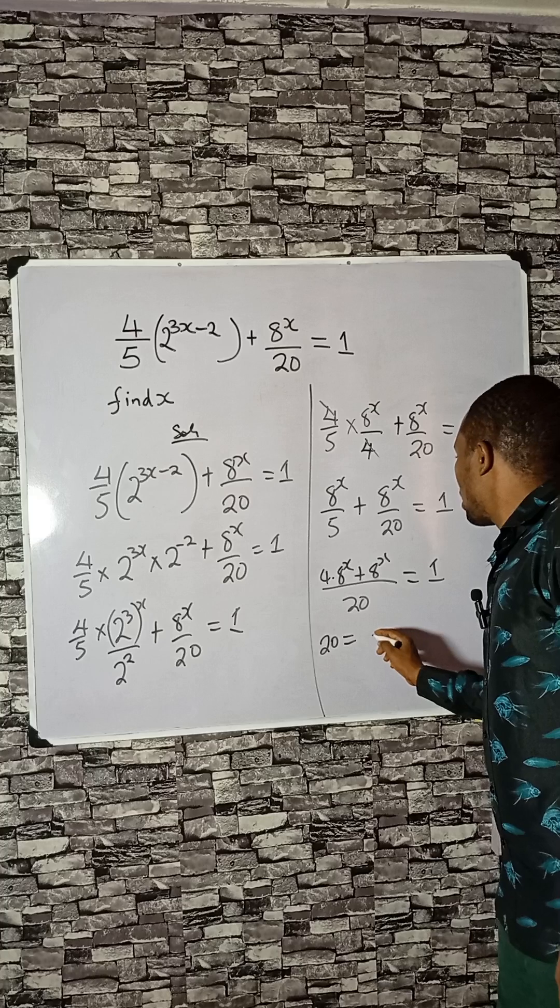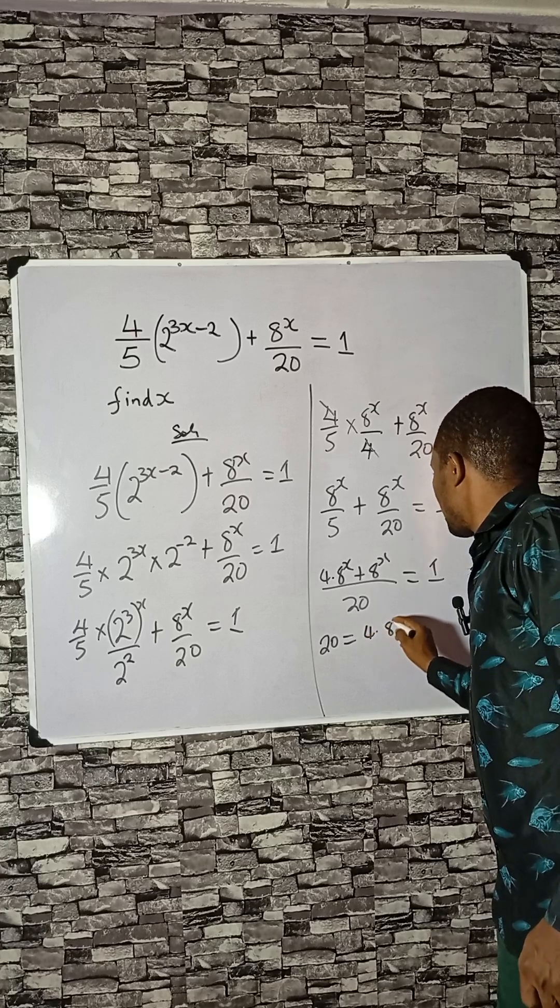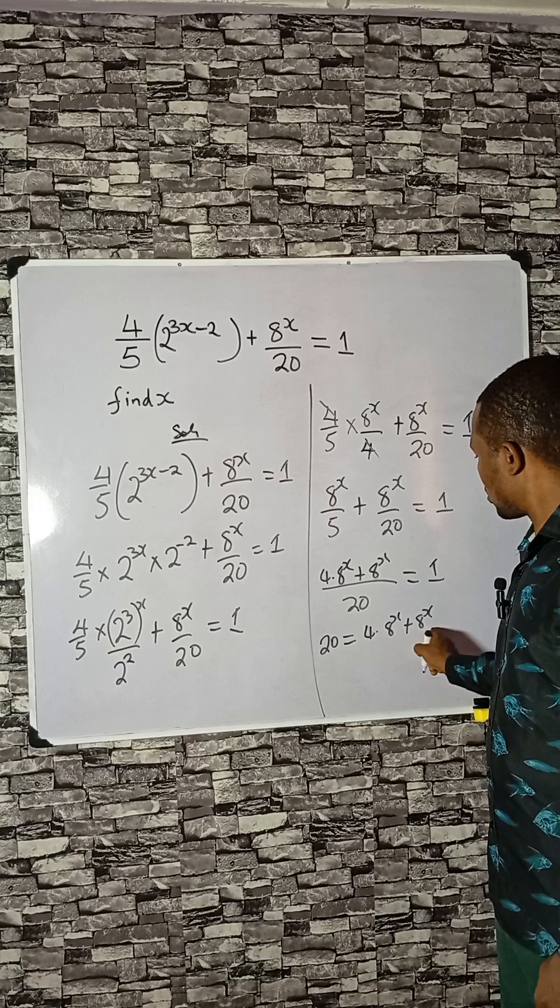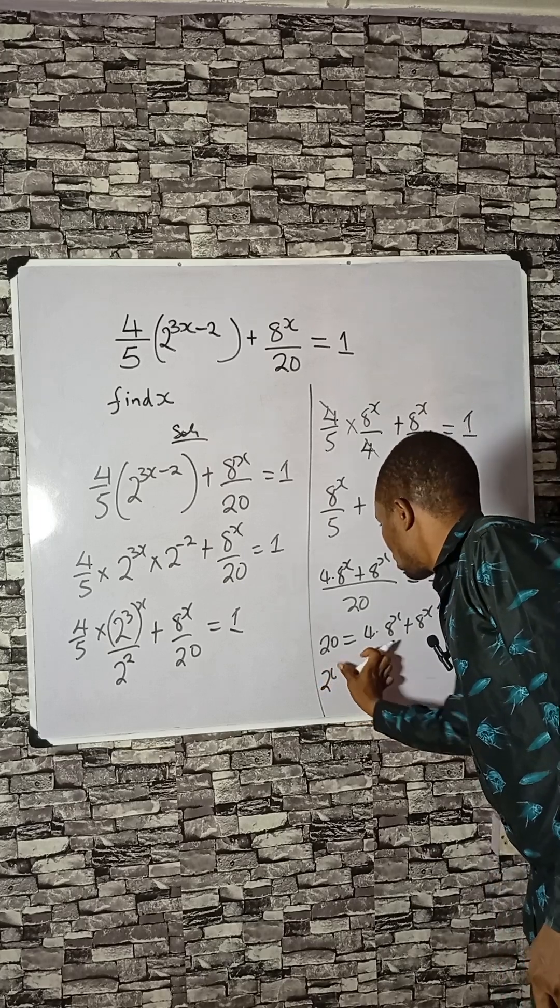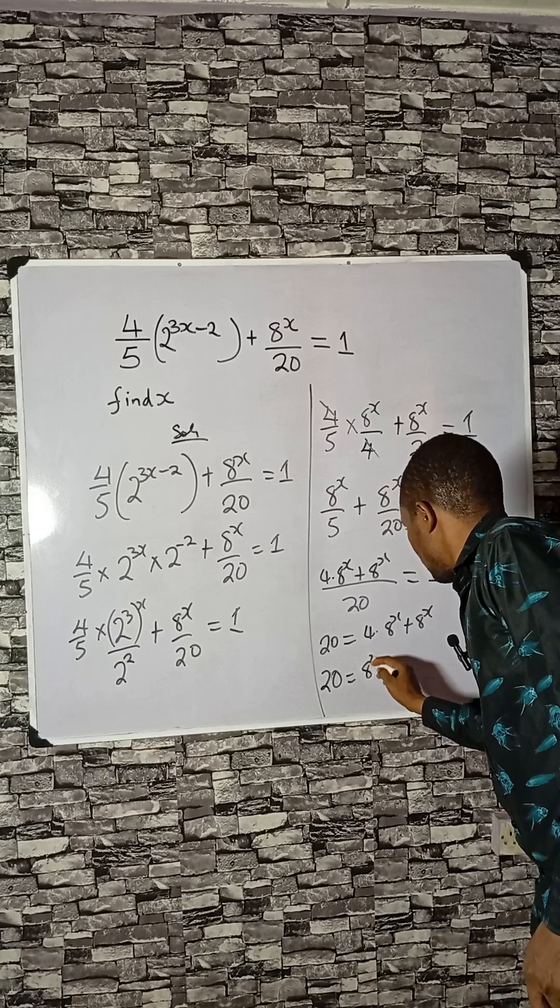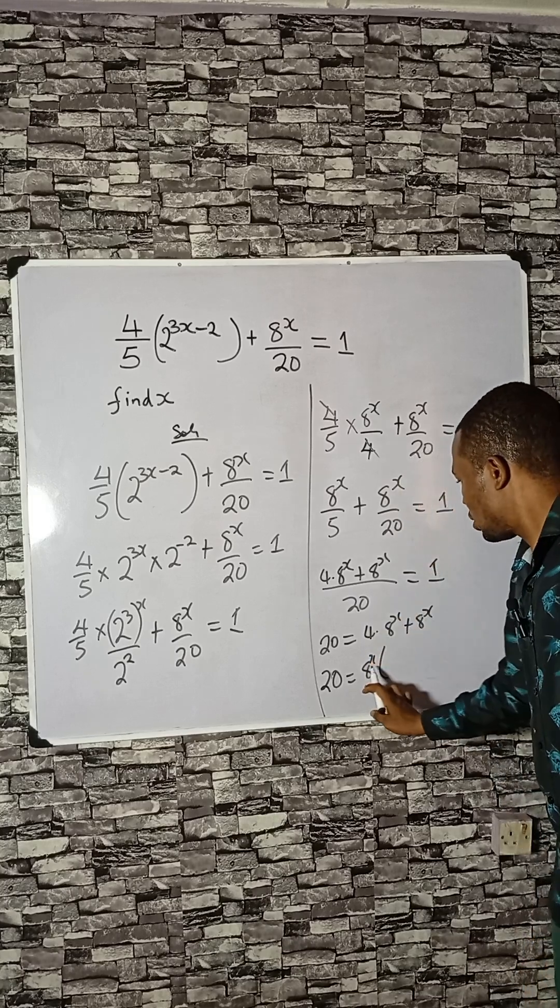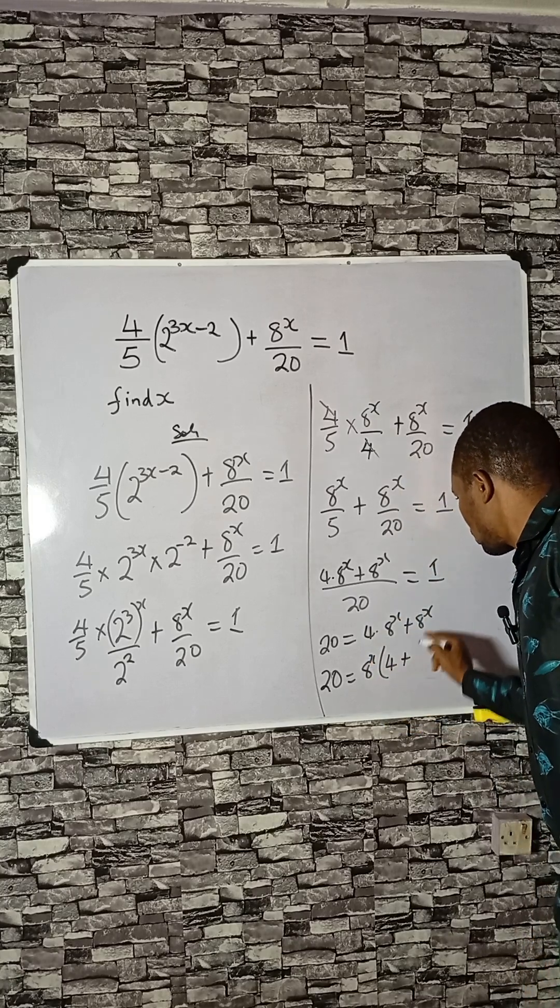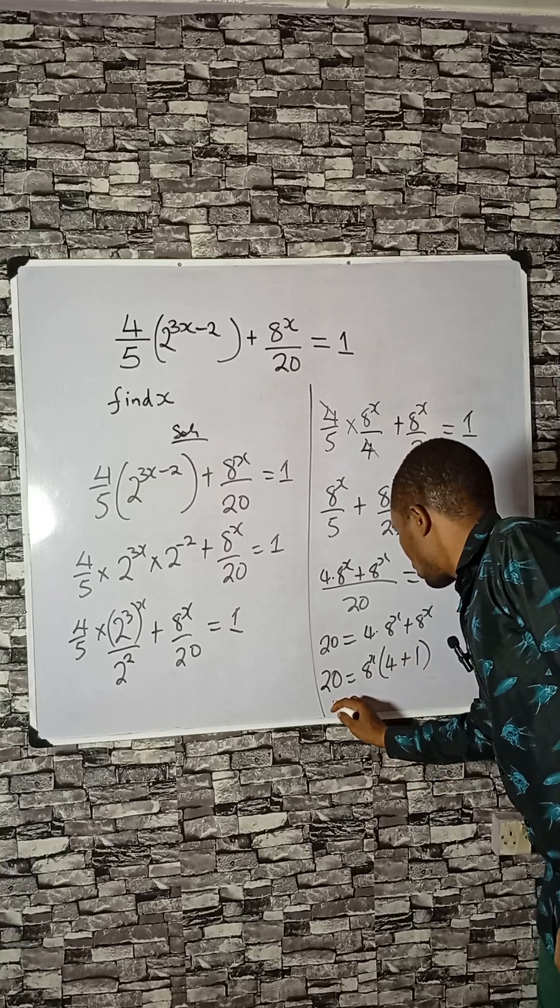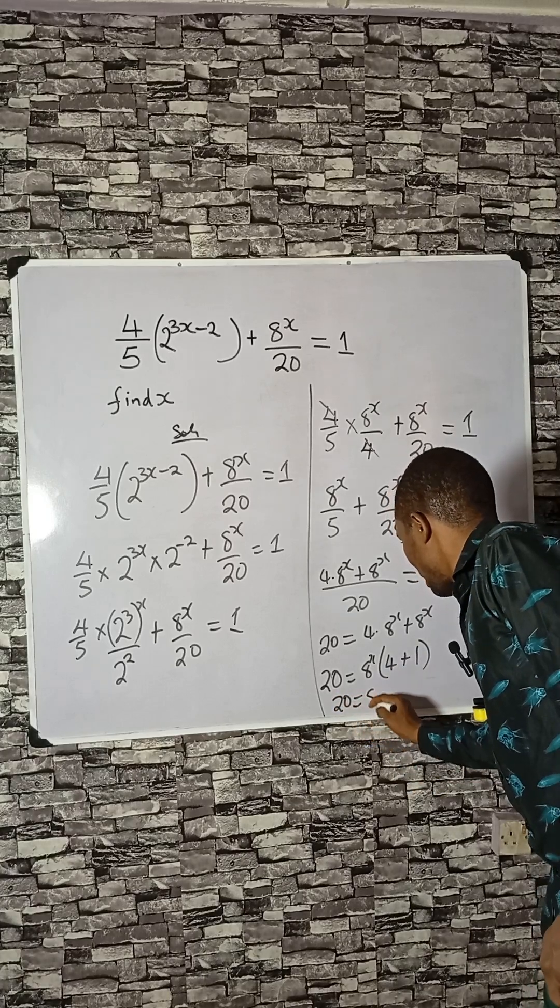That's 20 times 1, then 4 times 8 to the x plus x. This is common, so we can factor out 8 to the x. You divide to get 4 plus 1, which is 5. So 5 times 8 raised to the power x equals 20.